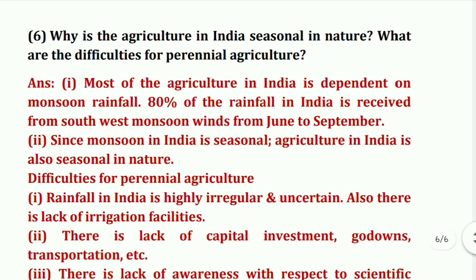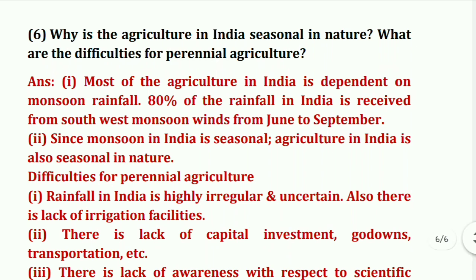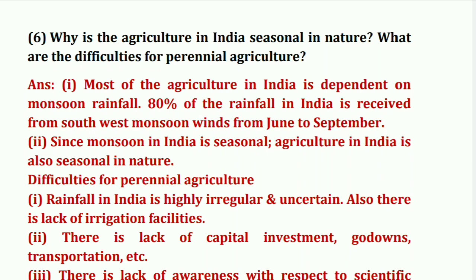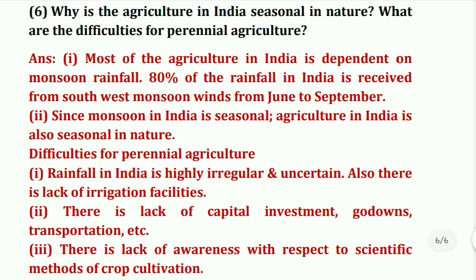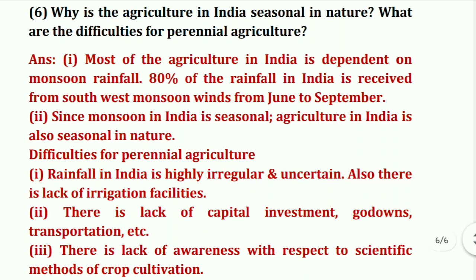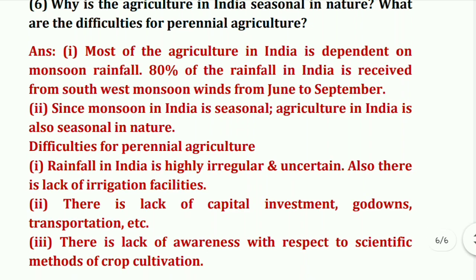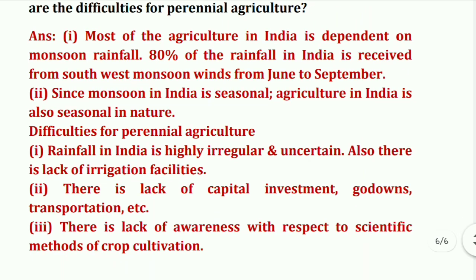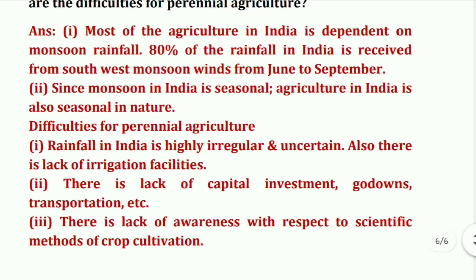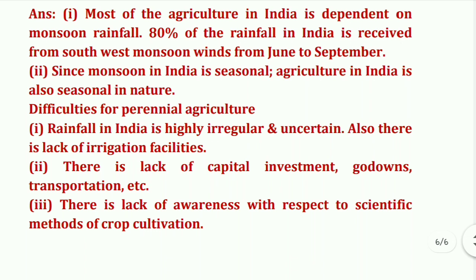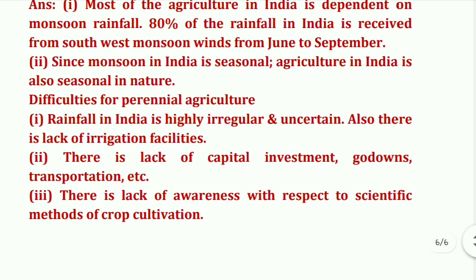Next question: why is agriculture in India seasonal in nature, and what are the difficulties for perennial agriculture? Most agriculture in India is dependent on monsoon rainfall — 80% of rainfall in India is received from the Southwest monsoon from June to September. Since monsoon in India is seasonal, agriculture is also seasonal in nature. Difficulties for perennial agriculture: rainfall is highly irregular and uncertain; there is a lack of irrigation facility, lack of capital investment, go-downs, and transportation; and there is lack of awareness about scientific methods of crop cultivation.